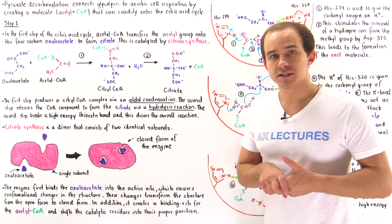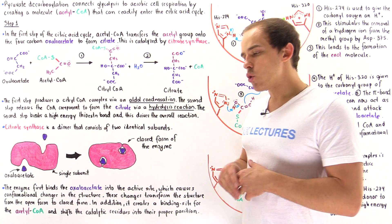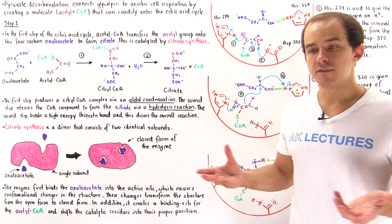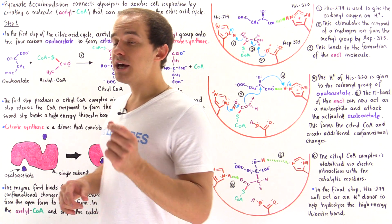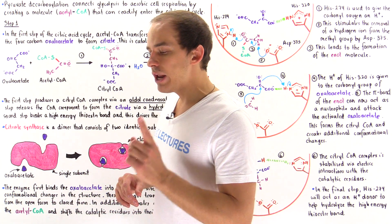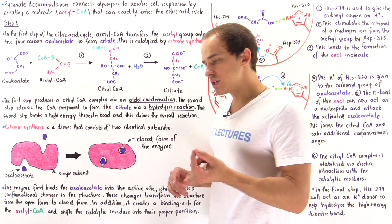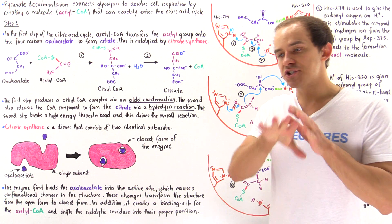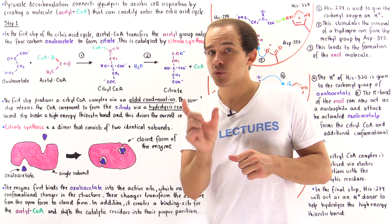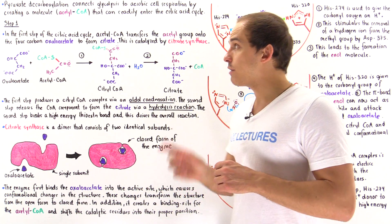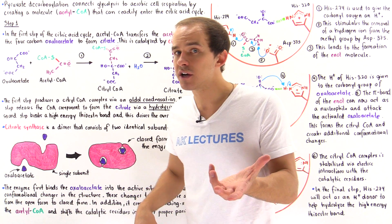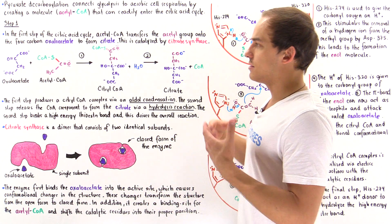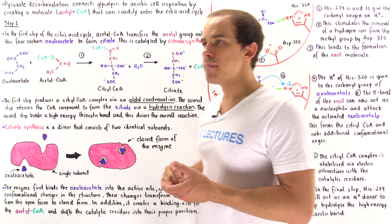Previously we focused on pyruvate decarboxylation. Once glycolysis takes place in the cytoplasm and we form the pyruvate molecules, under aerobic conditions when we have plenty of oxygen in the cell, the pyruvate molecules move into the matrix of the mitochondria. Before they can enter the citric acid cycle, they must be activated by removing a carbon dioxide and placing the remaining two-carbon acetyl group onto coenzyme A. At the end of pyruvate decarboxylation, we form the acetyl coenzyme A complex.